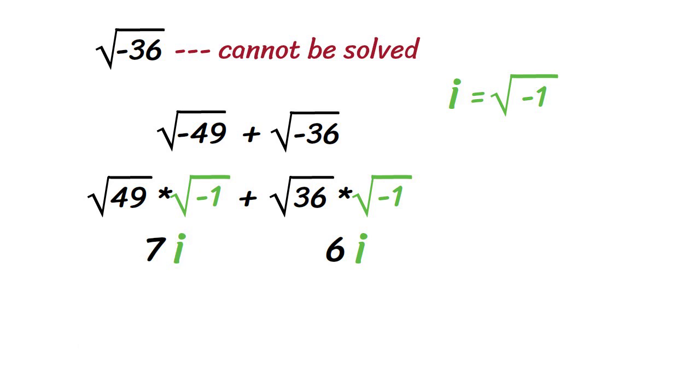We can then find the square root of 49, which is 7. Since these two are both imaginary numbers, we can now add them. 7i plus 6i is 13i. So square root of negative 49 plus square root of negative 36 is the imaginary number 13i.